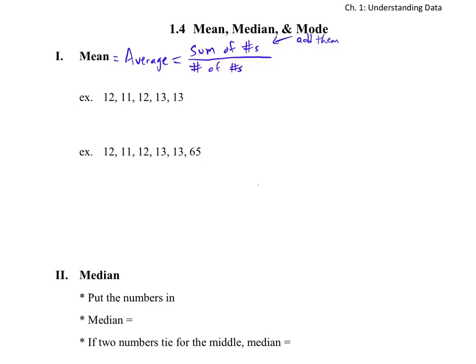Then you divide by the number of numbers. So for this next bit, if we wanted to find the average there, we wanted to find the mean, we could take all those numbers and add them together. So if we do 12 plus 11, so 12 plus 11 plus 12 plus 13 plus 13.